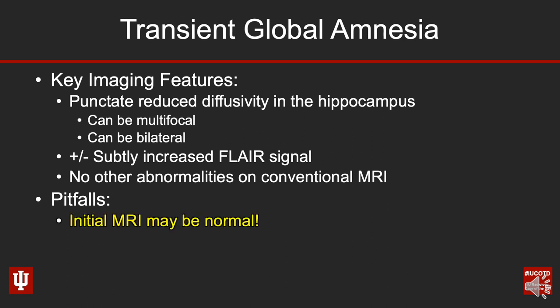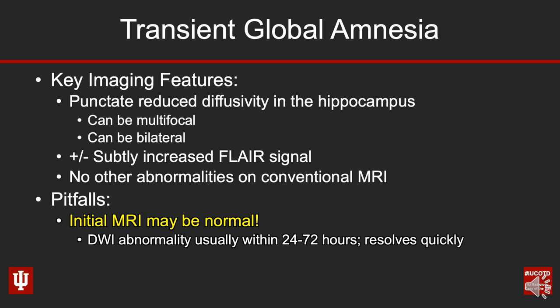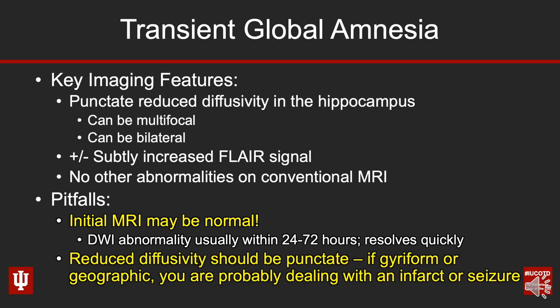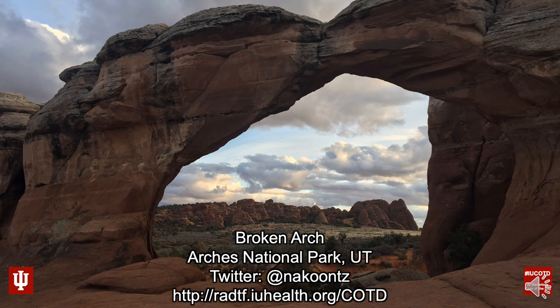There are a couple of pitfalls to keep in mind. First, in our experience at IU, the initial MRI may be normal — in fact, the majority of our cases have been normal. You can certainly see the diffusion weighted signal abnormality, but it tends to resolve within about 24 to 72 hours and doesn't leave lasting signal abnormality. Whenever you see reduced diffusivity in this setting, it should be punctate. If you're seeing gyral-form or geographic reduced diffusivity, you're probably dealing with an infarct, a seizure, or potentially encephalitis — it should not be a geographic or curvilinear distribution.